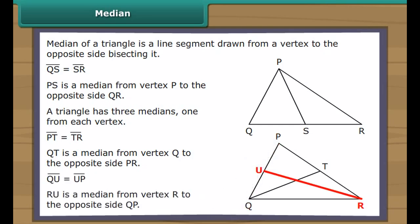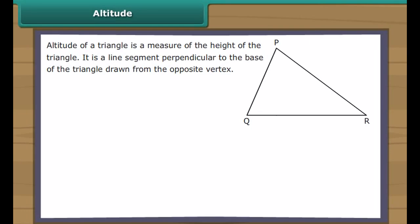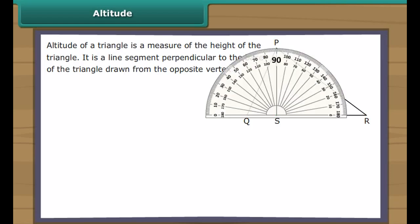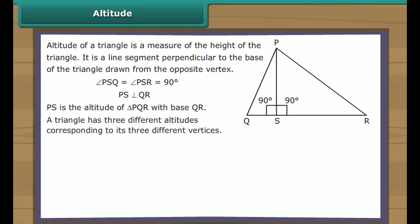Therefore RU is a median from vertex R to the opposite side QP. Altitude: the altitude of a triangle is a measure of the height of the triangle. It is a line segment perpendicular to the base of the triangle drawn from the opposite vertex. In the figure, line segment PS is a perpendicular drawn from vertex P to the base QR. It intersects QR at right angles. Therefore PS is the altitude of triangle PQR with base QR. A triangle has three different altitudes corresponding to its three different vertices.